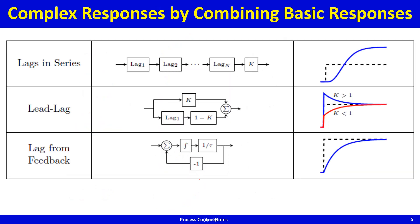These basic dynamic elements can be combined. If you have n lags combined in series with a gain, you get the classic S-shaped response, where the gain is the final value assuming a unit step response. This S-shape is a tell-tale sign of multiple lags in series — tanks in series, trays in a distillation column, a plug flow reactor modeled as a bunch of CSTRs in series, all small lags feeding into each other.